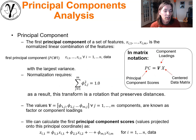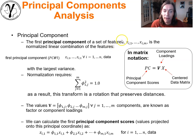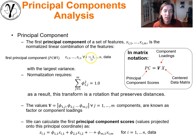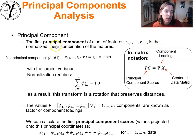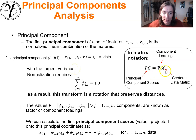The first principal component is the normalized linear combination of features with the largest variance described. In matrix notation, we take our original centered (and likely standardized) data matrix and solve for component loadings — the linear weights applied to each feature — resulting in brand new principal component scores. A normalization is required: the sum of squares of loadings over features must equal one, making this transformation a rotation.